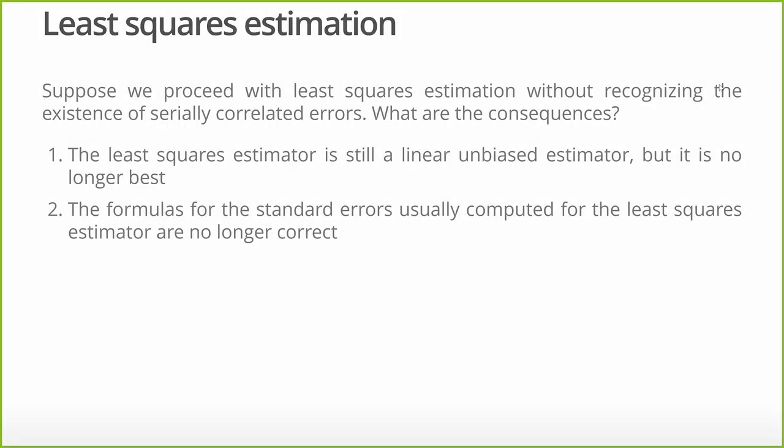Before we get going, we can talk a little bit about least squares. What if we just use least squares? Well, we still have an unbiased estimator, but it's not the best one anymore. Basically when we have serial correlation, we've got pattern in the error terms and we're throwing information away. There's information there that we're throwing away, so what we really should be doing is trying to figure out a way to get that information.